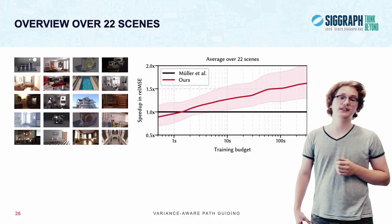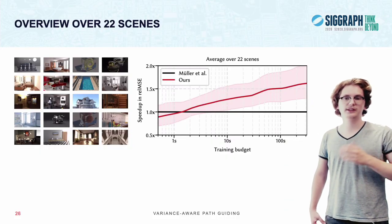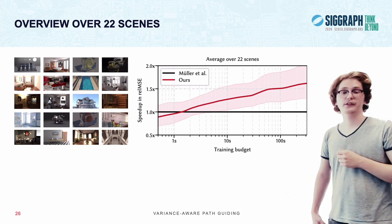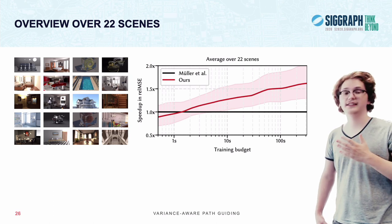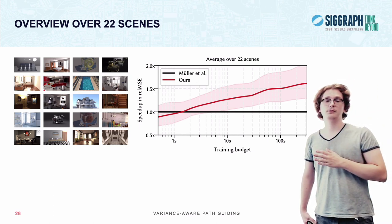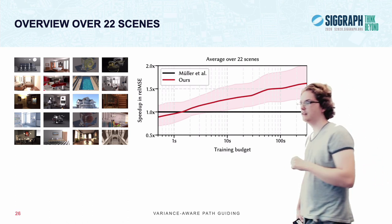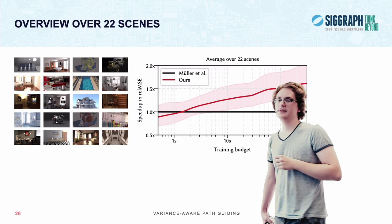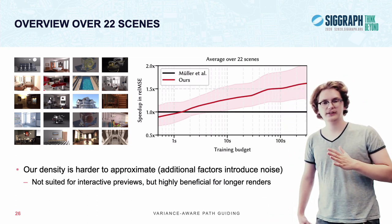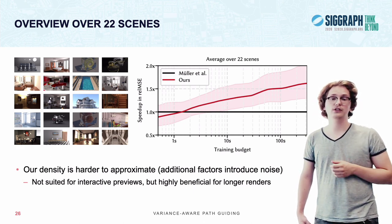But those aren't the only scenes that we've tested. We've actually evaluated our distribution on a corpus of 22 test scenes. And we've plotted the relative speed up over a radiance-based approach in this plot, depending on how much time you spend training your guiding distribution. And as you can see, for very short training times, we are actually slightly worse than radiance-based guiding. That's because our density can be a bit harder to approximate due to additional factors that can cause noise.